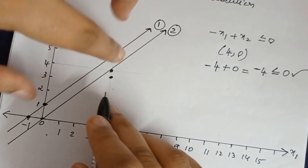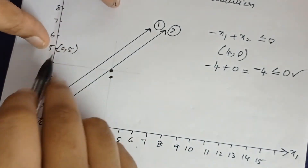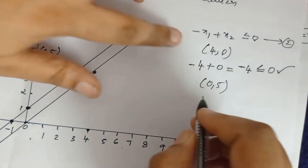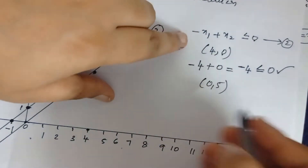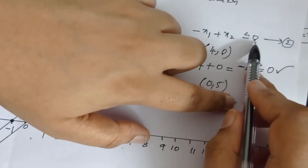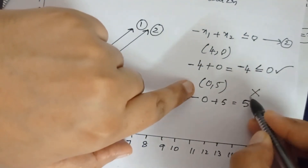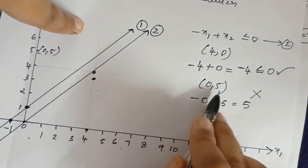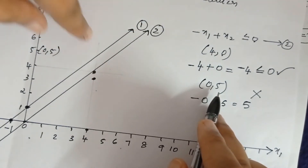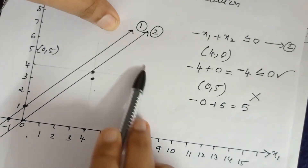To confirm, take a point above the graph: (0, 5). Substituting: -0 + 5 = 5. Is 5 ≤ 0? No, 5 is greater than 0, so (0, 5) is not a solution. This confirms we cannot take the region above the graph. We shade the bottom region.